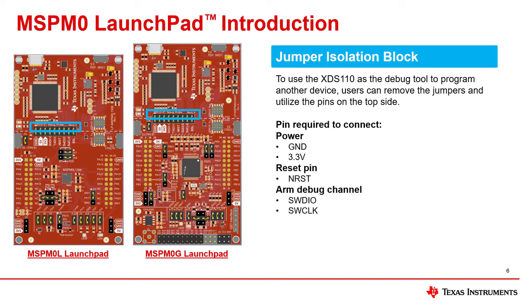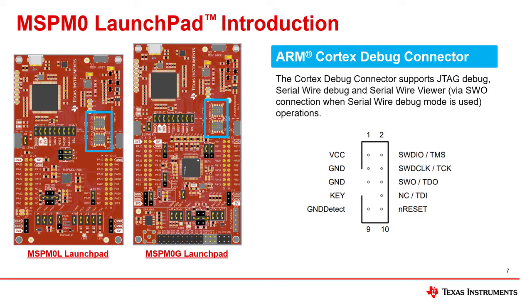It is important to connect the 3.3 volt, ground, reset, and the two serial port wires for ARM programming. In addition to the jumper bridge, you can also use the standard ARM Cortex 10-pin connector to debug.